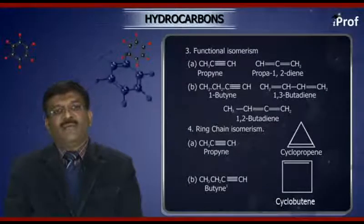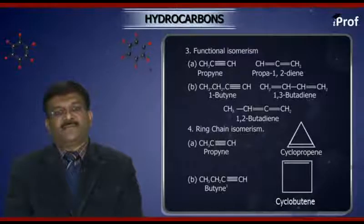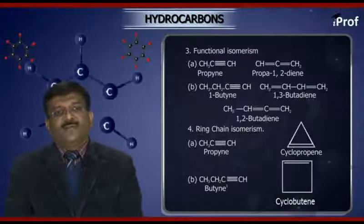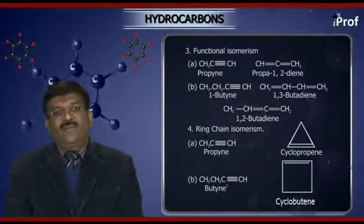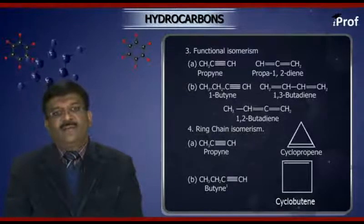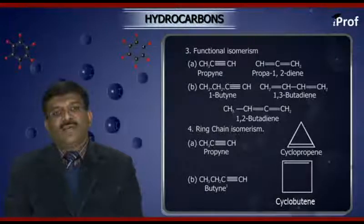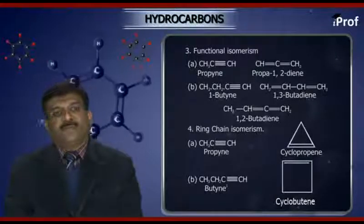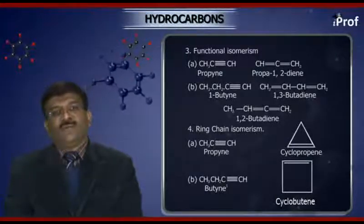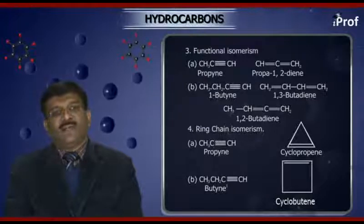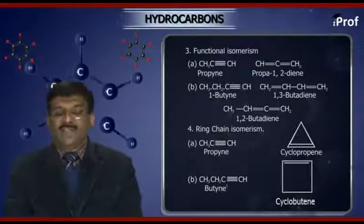Functional isomerism: propyne and propa-1,2-diene; 1-butyne and 1,3-butadiene, and 1,2-butadiene. So 1-butyne, 1,3-butadiene, and 1,2-butadiene are functional isomers.